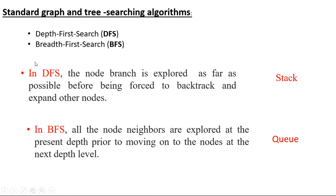In depth first search, as it is obvious from the name, the node branch is explored as far as possible before being forced to backtrack and expand other nodes. While in breadth first search, all the node neighbors are explored at the present depth prior to moving on to the nodes at the next depth level. Usually, it's easier to implement depth first search using a stack and breadth first search using a queue.